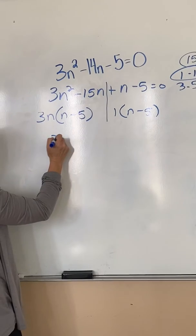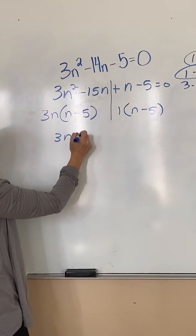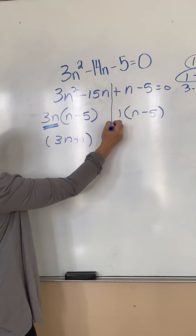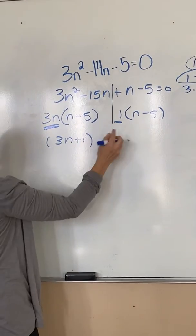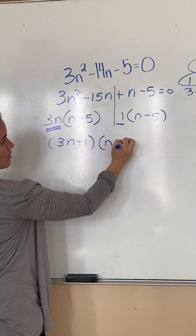And now I do my regrouping. So I have 3n plus 1. I write the stuff that's on the outside. I put them together. Those should always be the same, and so I put those.